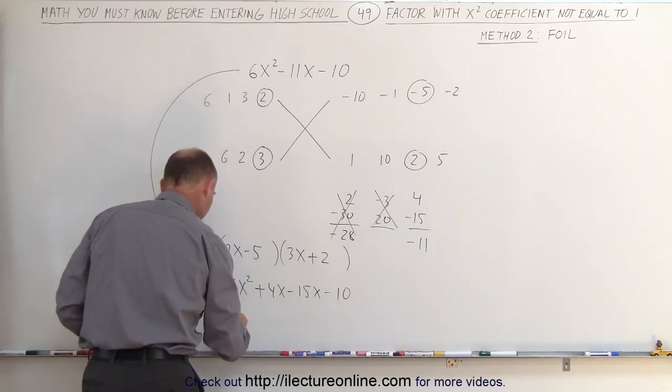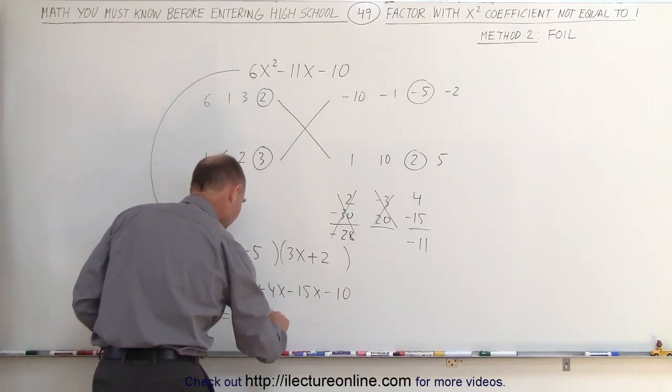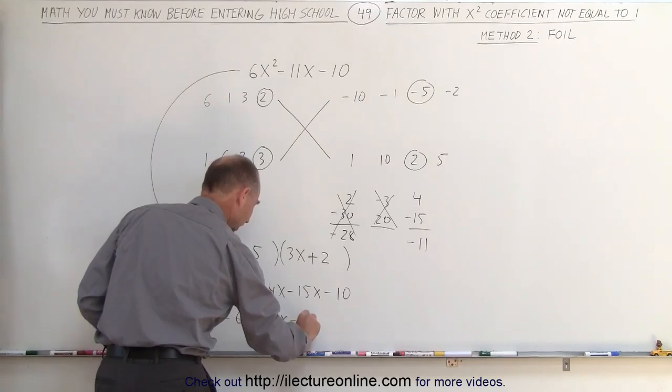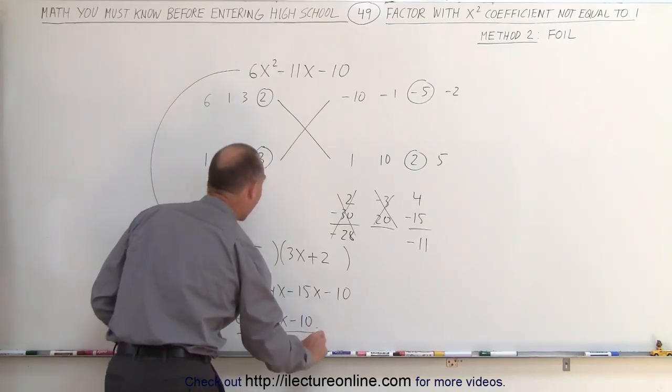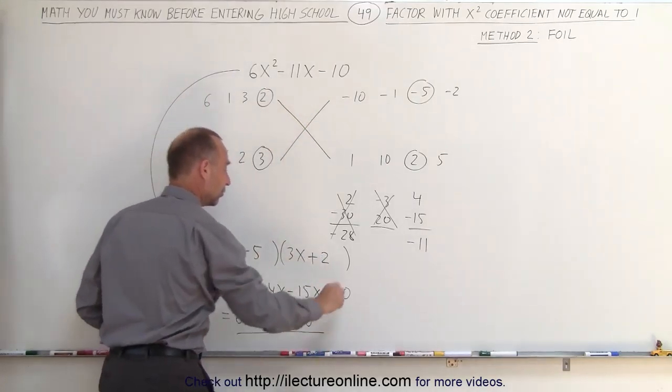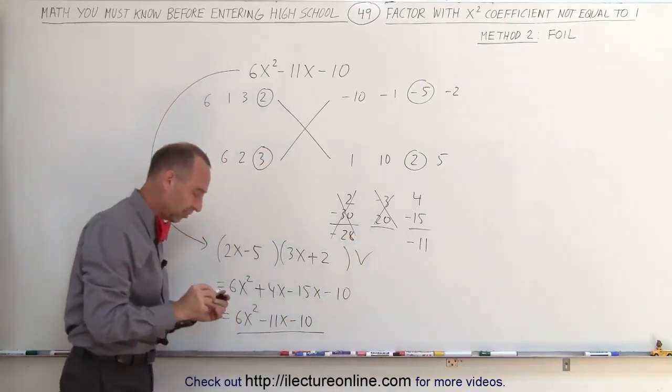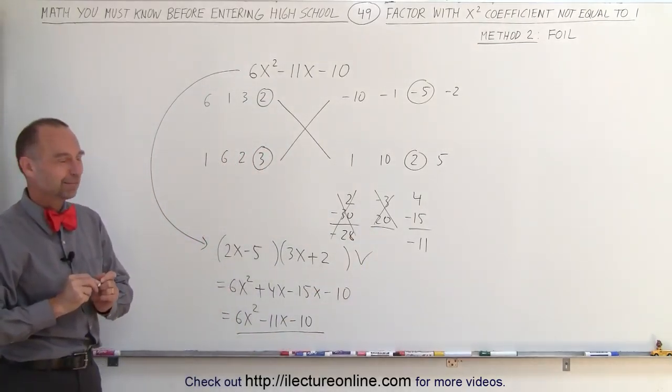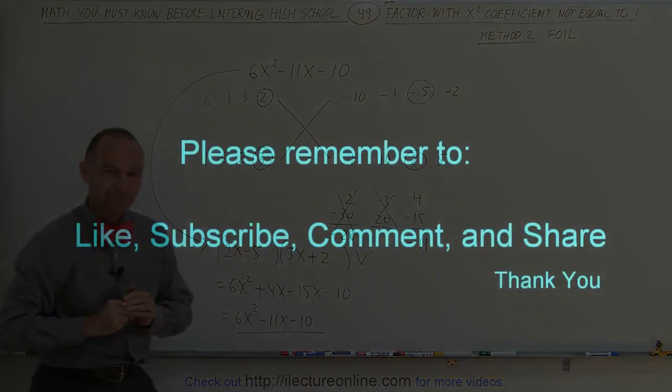When I add the common terms together, this is equal to 6x squared minus 11x minus 10, which is the same as I had on the original problem, which means I found the correct answer. And that's how we do that.